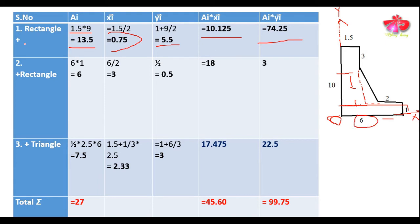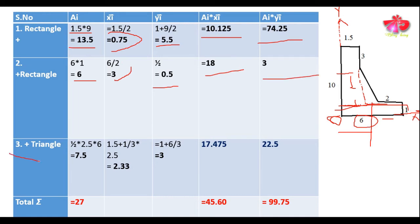For the second rectangular portion with base 6 m and height 1 m, the area is 6 × 1 = 6 m². The centroid x̄ is at b/2 = 6/2 = 3 m, and ȳ is at h/2 = 1/2 = 0.5 m, since the centroid of a rectangle always lies at the half position. So Ai·x̄i = 18 and Ai·ȳi = 3.